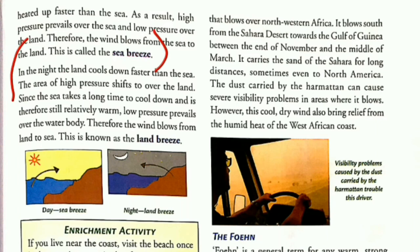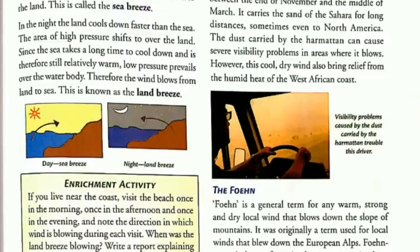Second point: in the night, the land cools down faster than the sea. The sea takes a long time to cool down and low pressure prevails over the water body. Therefore, the wind blows from land to sea — this is known as the land breeze. For answer 5, you also need to draw the diagram on page 49 showing sea breeze during the day and land breeze at night.